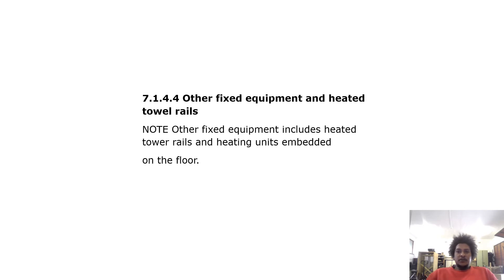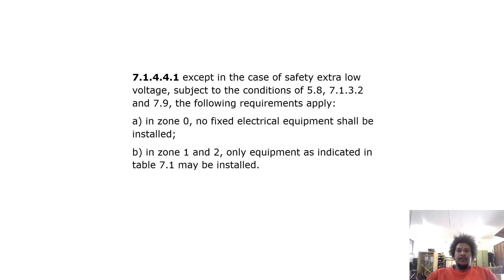Other fixed equipment and heated towel rails: note that other fixed equipment includes heated towel rails and heating units embedded in the floor. Except in the case of SELV, subject to the conditions of 5.8, 7.1.3.2 and 7.9, the following requirements apply: in zone 0, no fixed electrical equipment shall be installed; in zones 1 and 2, only equipment as indicated in Table 7.1 may be installed.